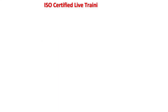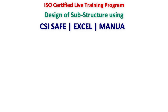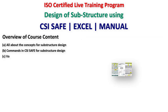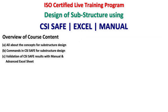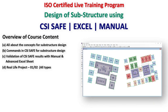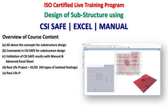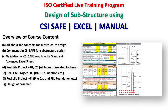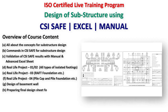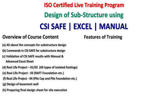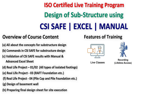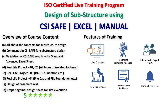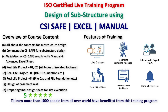This ISO-certified live training program on design of substructure using CSI SAFE, Excel, and manual approach covers all concepts of substructure design, CSI SAFE commands, validation of CSI SAFE results with manual and advanced Excel sheets, and four real life projects: isolated foundations (projects 1 and 2), raft foundation (project 3), and pile and pile cap design (project 4). Features include daily live classes by experts, lifetime recording access, expert interaction anytime, real practice exposure, and ISO certification — a five-star rated program from which over 1000 participants have benefited.